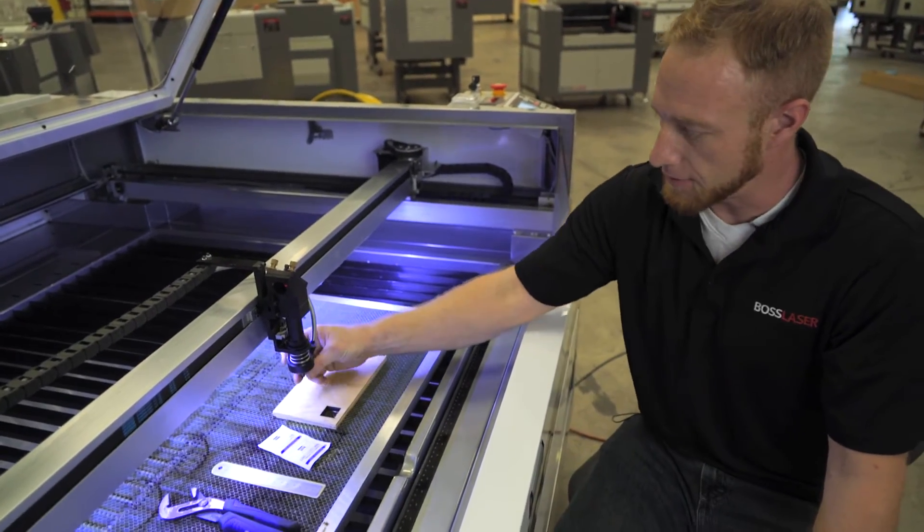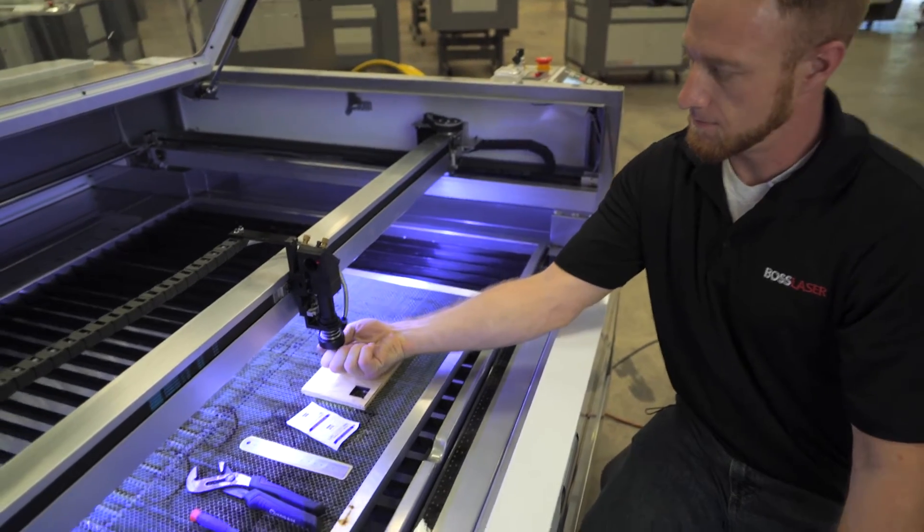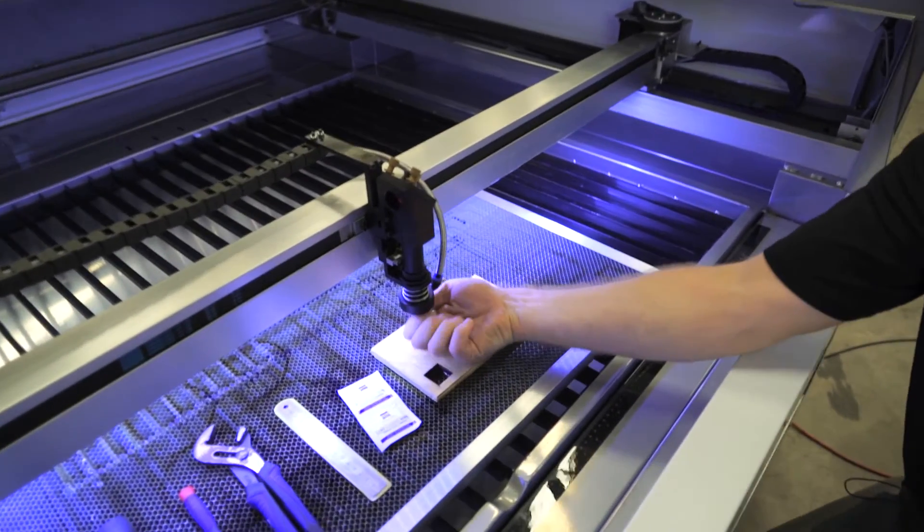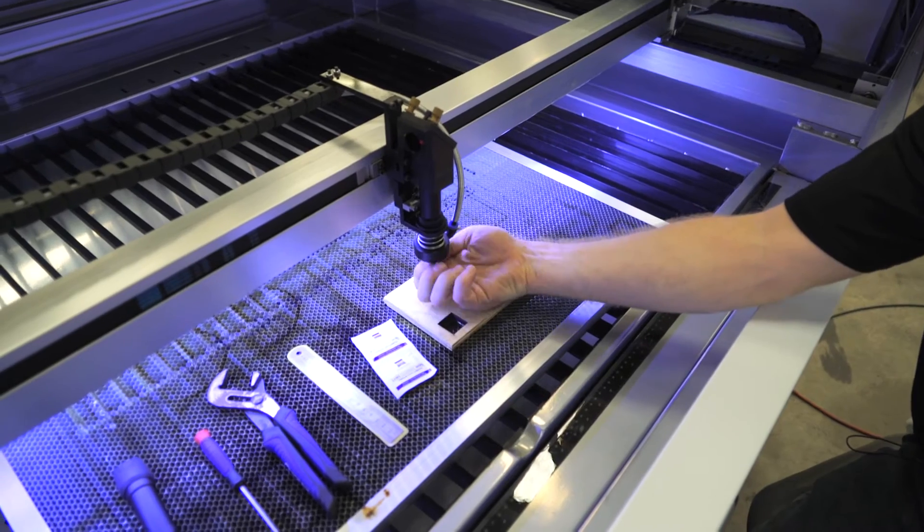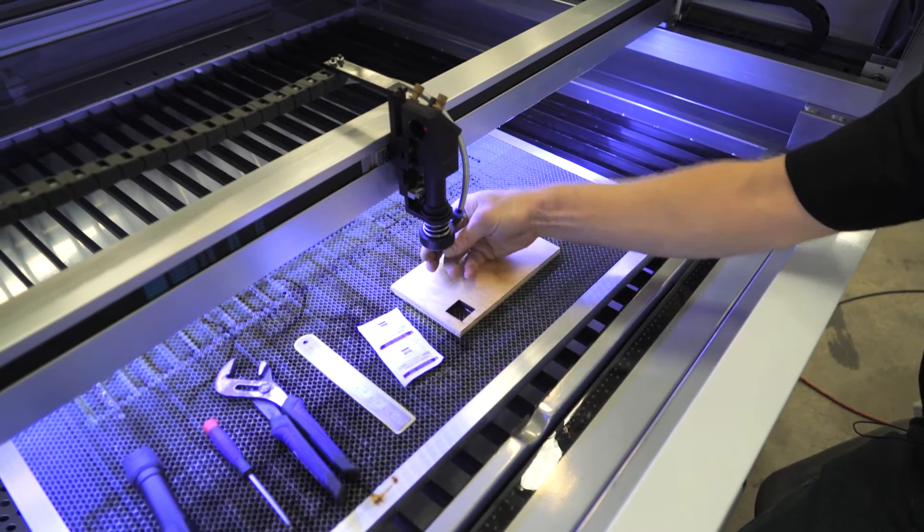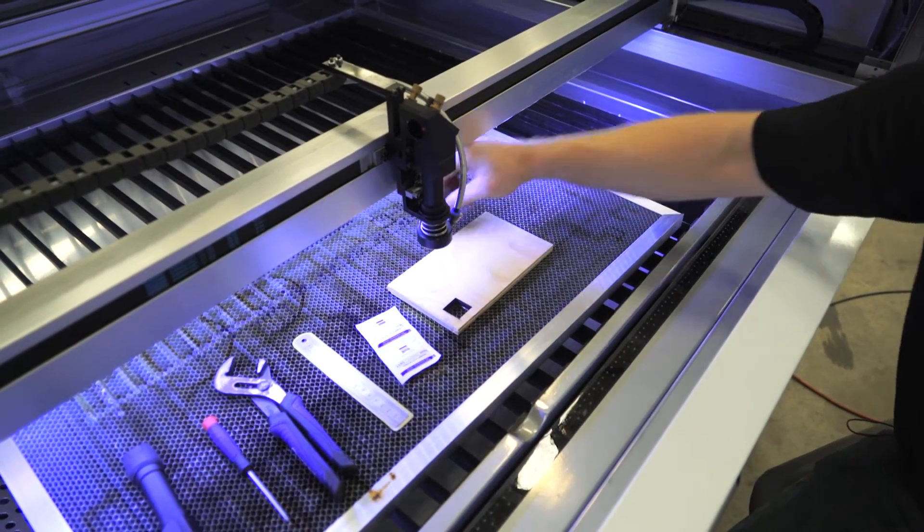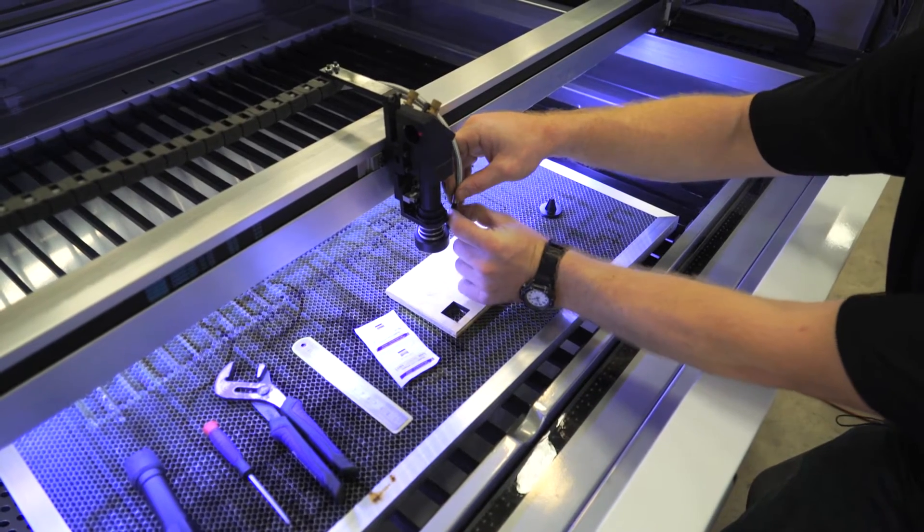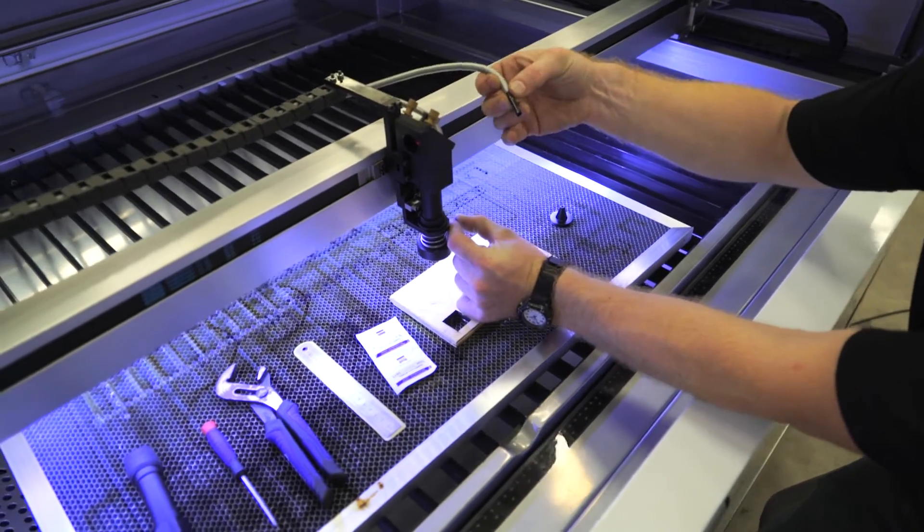We're going to start off by taking off the bottom cone. Take off the high pressure hose by pushing in on the little tab and pulling out.